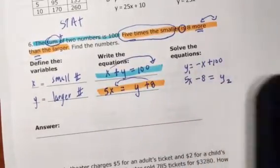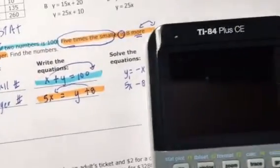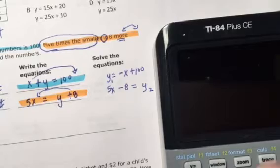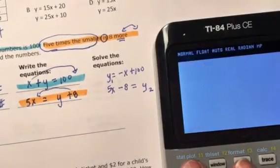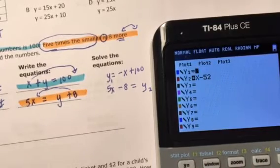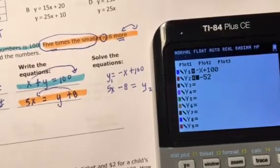So I'm going to put this into Y1 and this into Y2. If you'll remember from Tuesday of last week, we went to our calculators and in Y equals, we typed in negative X plus 100 and 5X minus eight.